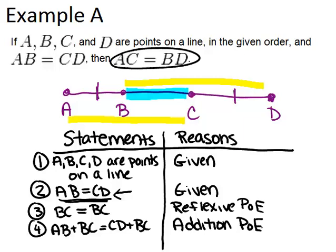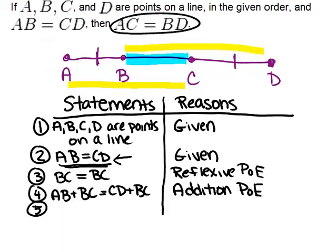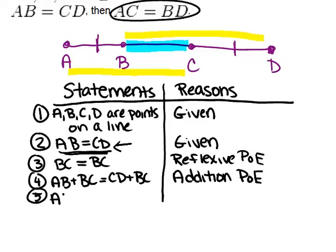Now the next thing I want to do is look and see what I've created. AB plus BC is actually AC. It's that full thing. So the next thing I'm going to say is AB plus BC is actually just AC. That's what the whole thing is. And similarly, CD plus BC, well, that whole thing is just BD. And notice these are the two segments that we're trying to talk about, that we're trying to prove something about.